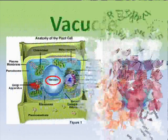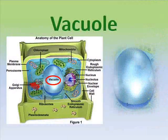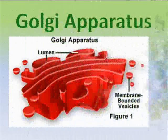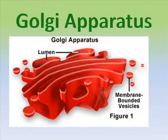The vacuole is a sac of fluid that stores enzymes, food, and proteins. The Golgi apparatus is a folded membrane that releases and receives packages of proteins and liquids.